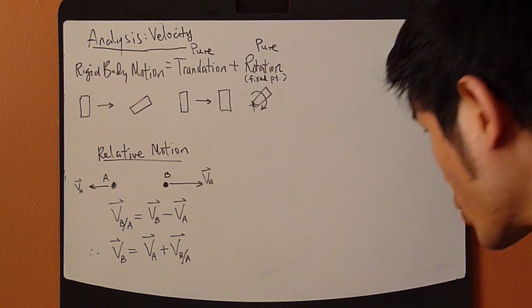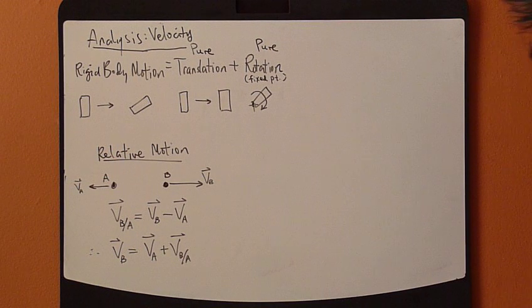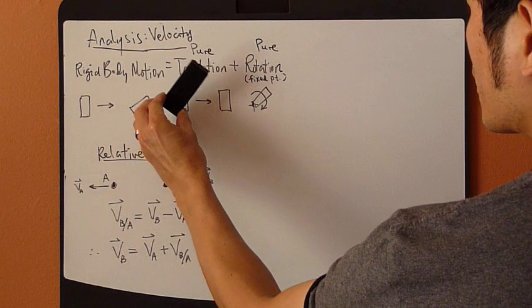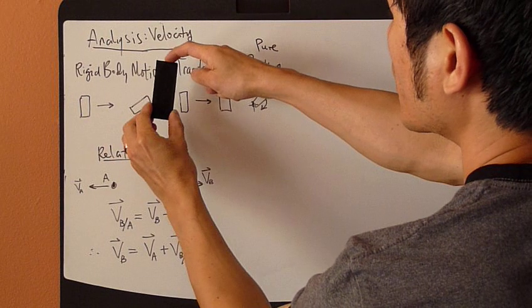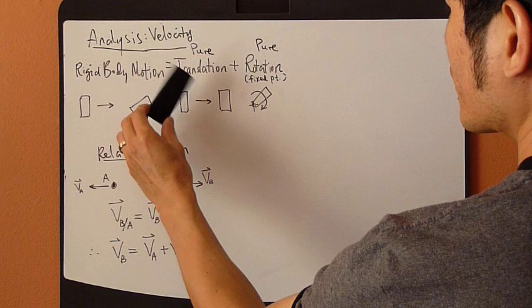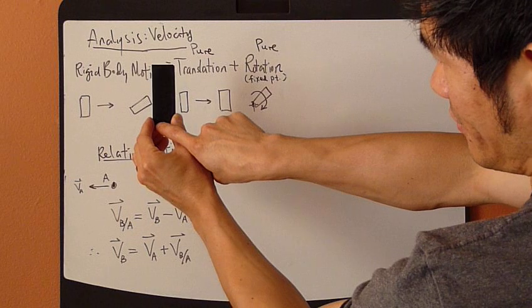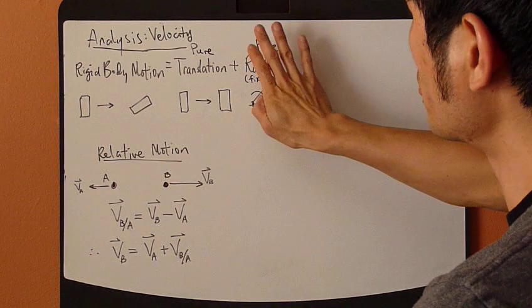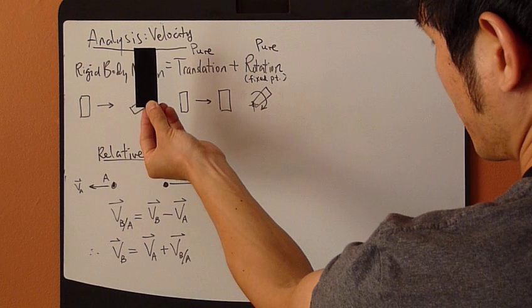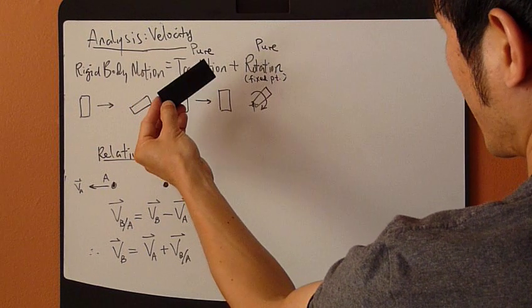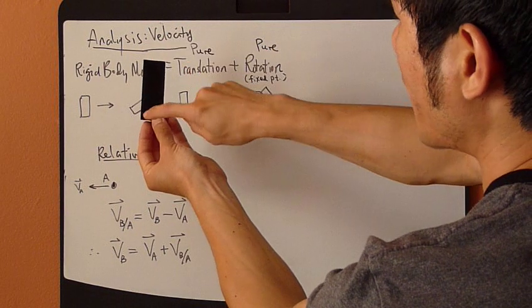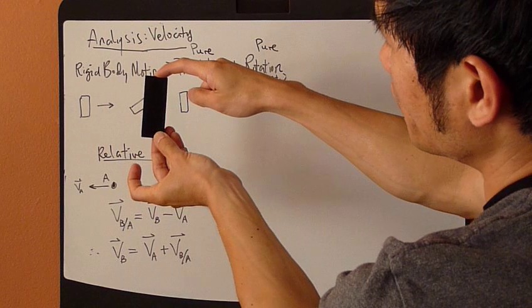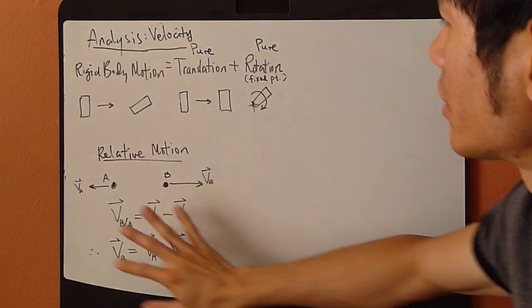Before we get into the actual procedure, we need to look at relative motion — this applies to the pure rotation component. For pure rotation, we're looking at the rotation of one point about a fixed point. In reality that bottom point is not fixed; it's actually moving. But in this pure rotation component, we fix it in space and look only at the effect of rotation. So the rotation of one point about another is actually a relative motion — the motion of one point relative to the other.